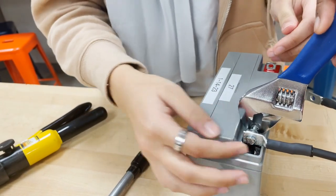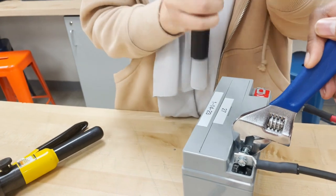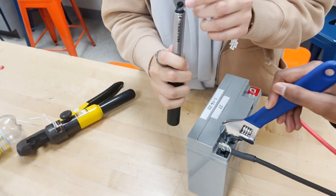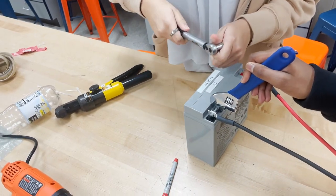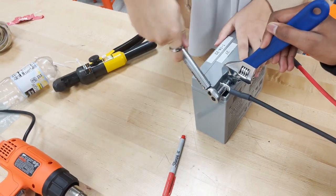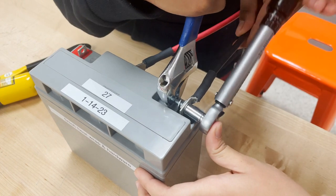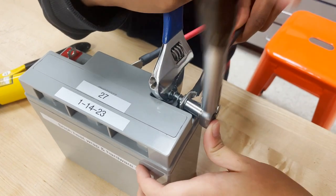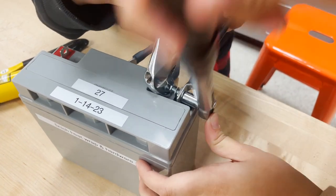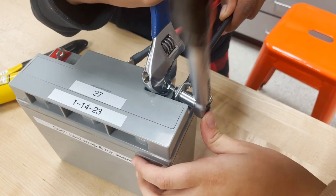And then one person will use a torque wrench on the tighten setting and start tightening. You should hear that clicking sound so you know it's being tightened.